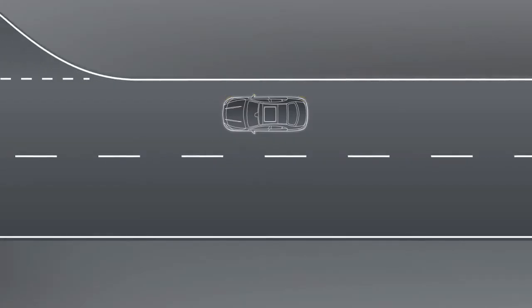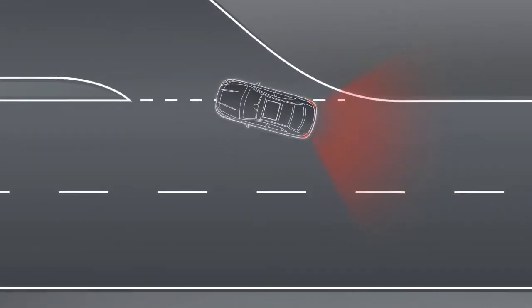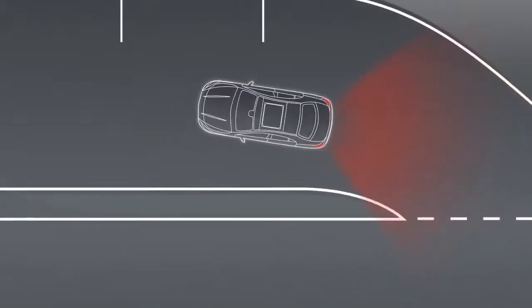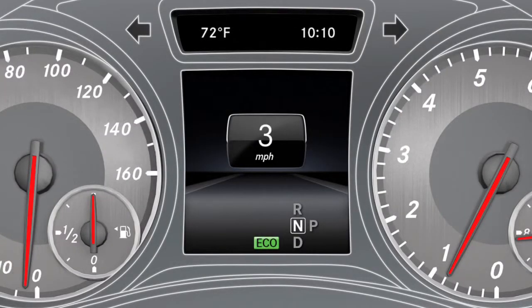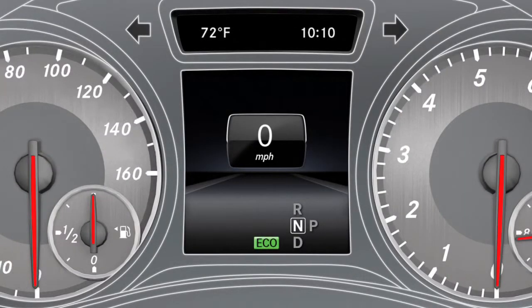The engine is switched off automatically if you brake your vehicle to a standstill in transmission positions D or N. If you remove your foot from the brake or accelerate, the engine will also start again.